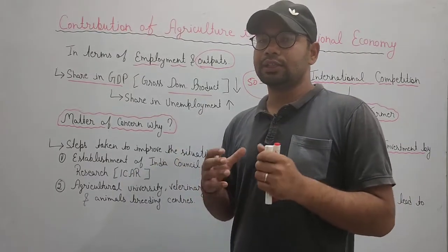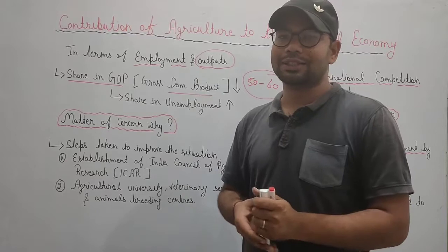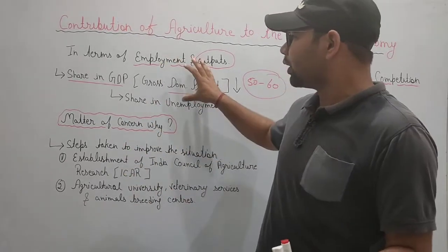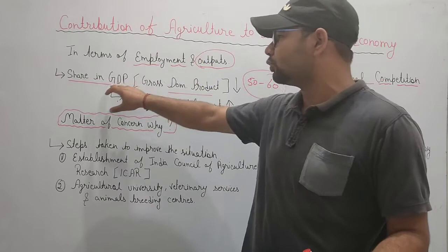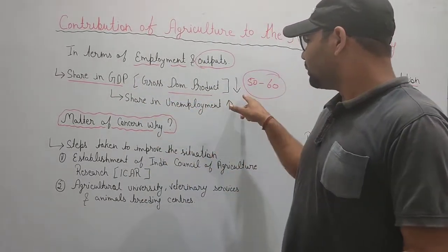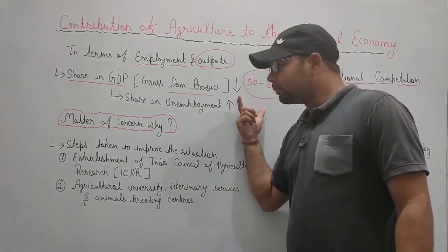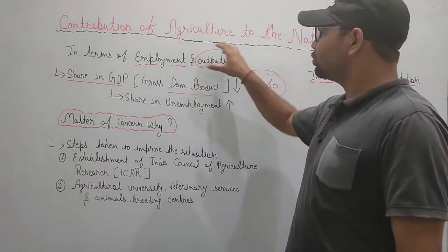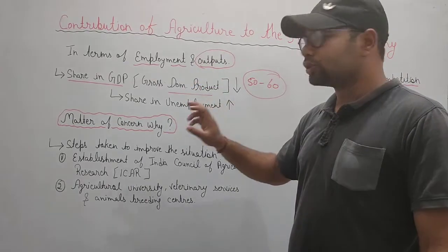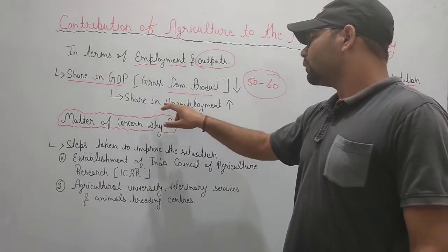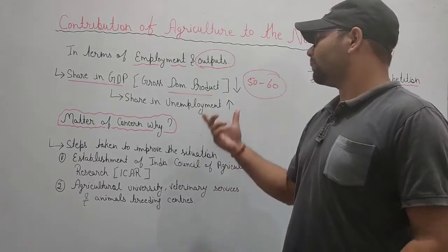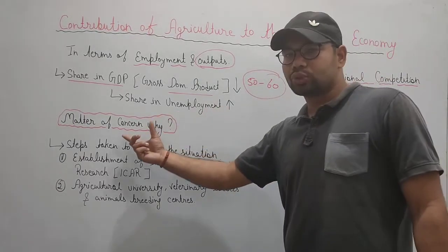This is a matter of concern. The first point is that this is a matter to think about: what should the government do? What steps should be taken? It is concerning that GDP share of agriculture is continuously decreasing, and those who are unemployed — who are not getting jobs — are increasing. This is a matrix to think about.